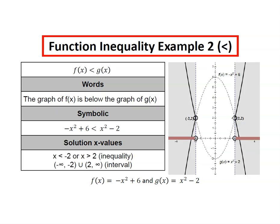Where is f(x) less than g(x)? This is where the graph of f(x) is below the graph of g(x). So in this case, g(x) is the concave up parabola, and f(x) is the concave down parabola.